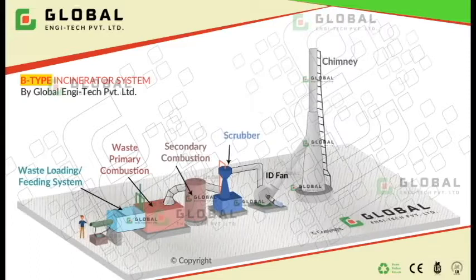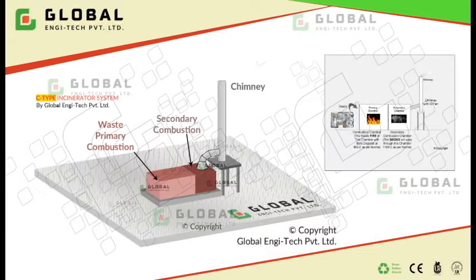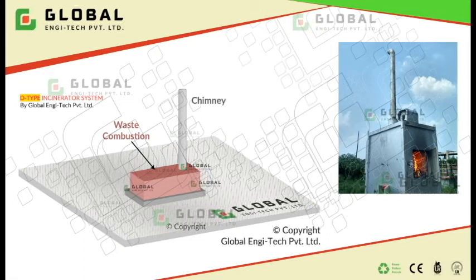B-type incinerators are with dual combustion chamber, any one pollution control equipment, and a lower height chimney — it is an economic model compared to A-type. C-type incinerators are with dual combustion chamber without any pollution control equipment and a lower height chimney. D-type incinerators are with just a combustion chamber and a chimney.